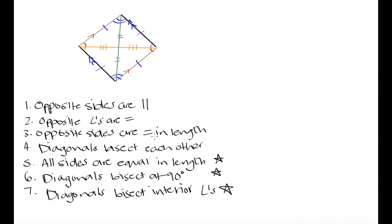In the last video we summarized the properties of the rhombus and found that the rhombus is a type of parallelogram that has all of the same properties that parallelograms do, but in addition the rhombus has all sides equal in length. The diagonals bisect at 90 degrees and the diagonals bisect the interior angles. In this lesson I'm going to prove both of those last two properties.